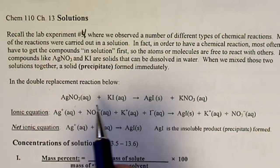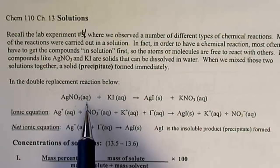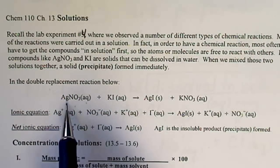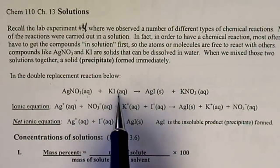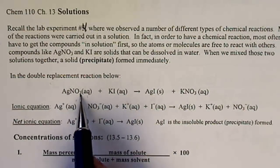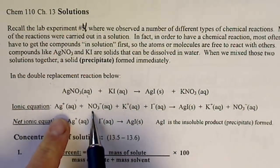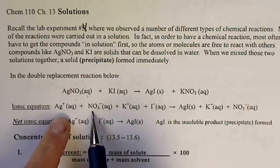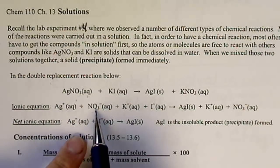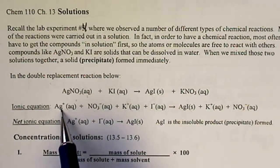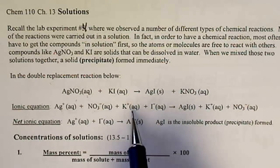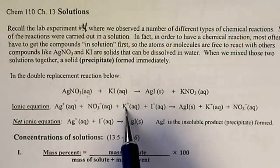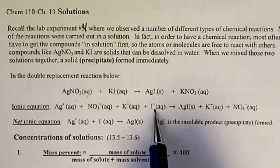Whenever we see this AQ, this means aqueous, which means this is not the solid, but it's actually dissolved in water, and so we could take this ionic compound and show that it's separated into ions. The nitrate is the polyatomic ion, and that's the silver ion, and then potassium iodide breaks up into potassium ions and the iodide ions.